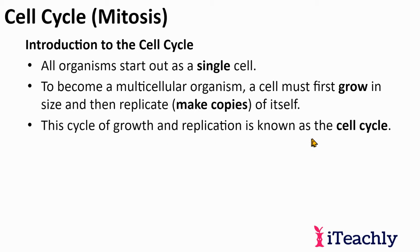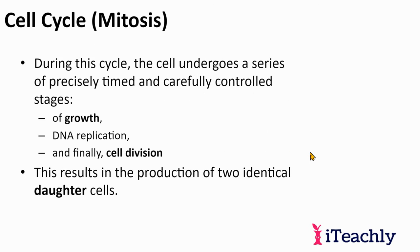The cycle of growth and replication is known as the cell cycle. During this cycle, the cell undergoes a series of precisely timed and carefully controlled stages of growth, DNA replication, and finally cell division. The result is the reproduction of two identical daughter cells — an exact same copy of DNA. You don't want any mistakes in the DNA.